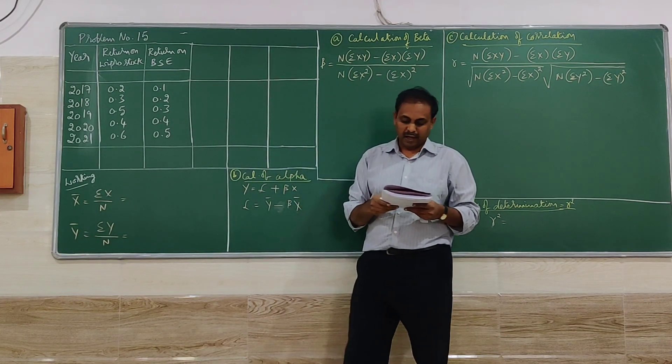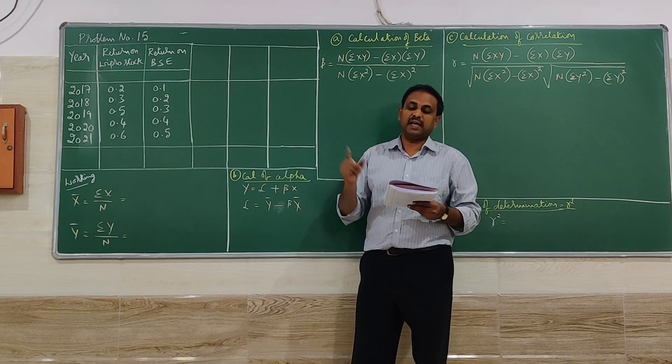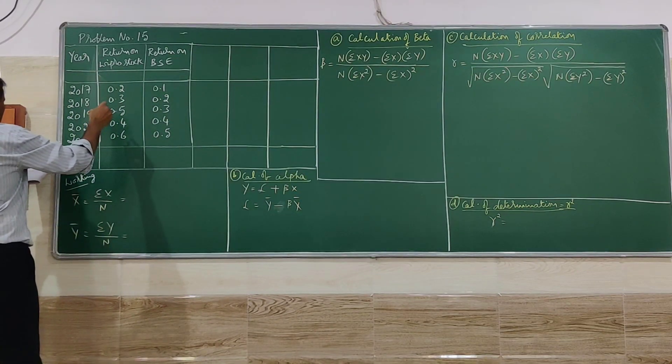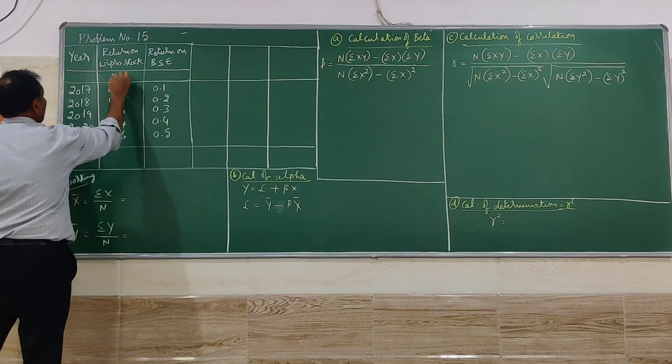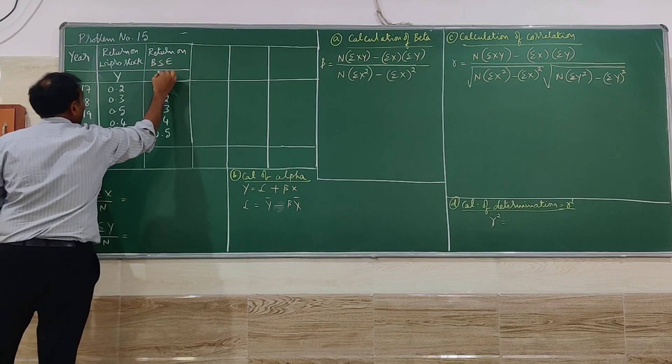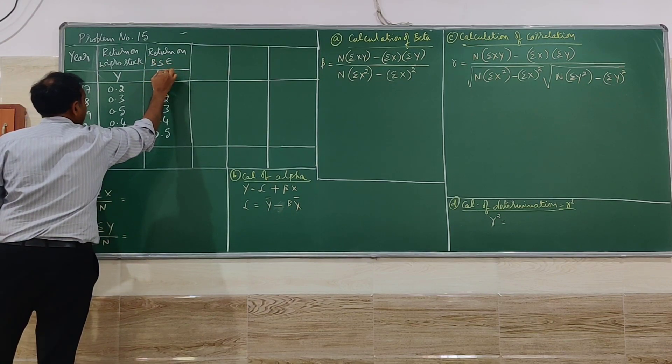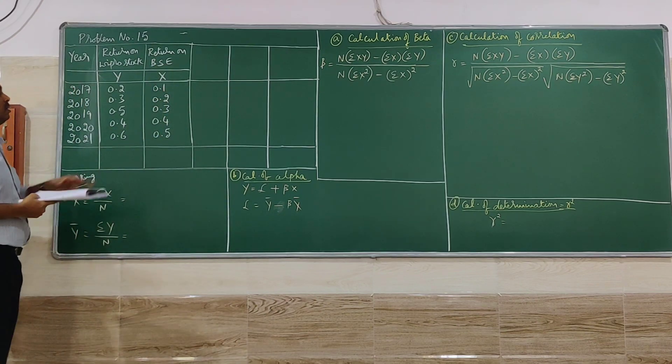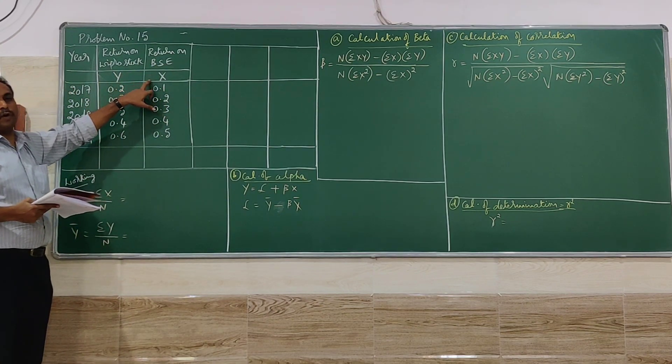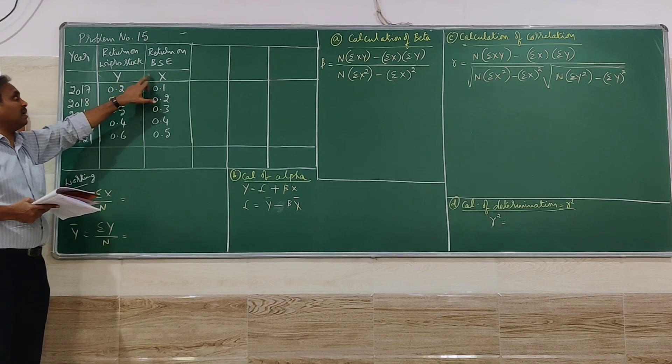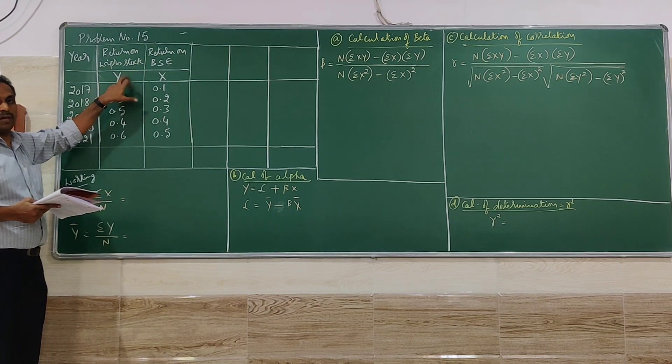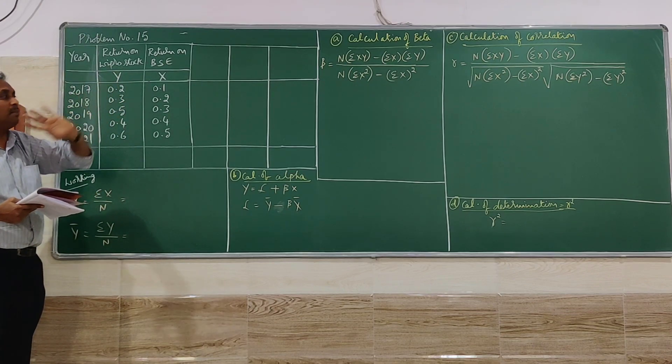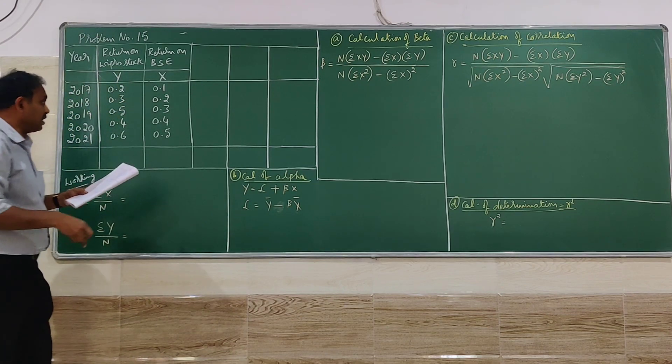So first we have to identify in this which is X and which is Y. So a particular company stock is going to be Y. Particular sensex or a market value will be X. So this is most important for you to identify. The market BSE is X. Particular company stock is Y. If it goes variation reverse, your problem will be wrong. So we will proceed further.